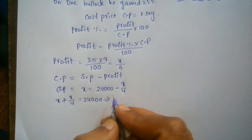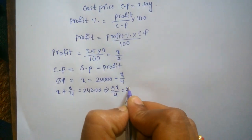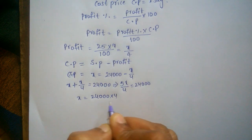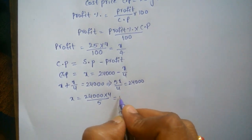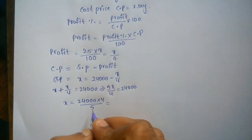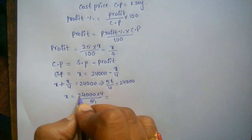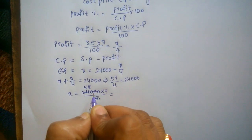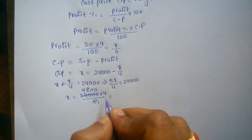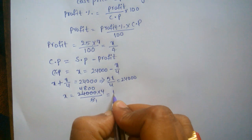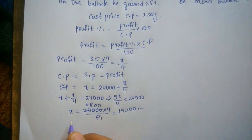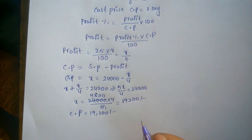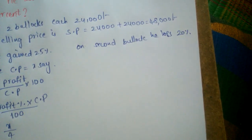So x plus x by 4 equals 24,000, then 5x by 4 equals 24,000, so x equals 24,000 times 4 by 5, which equals 19,200. Therefore the cost price of the first bullock is 19,200.